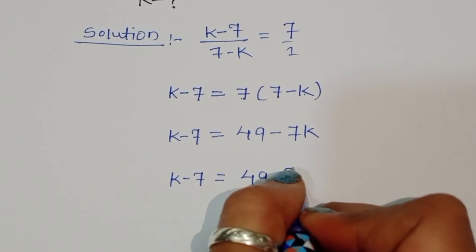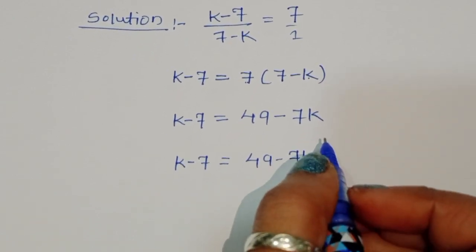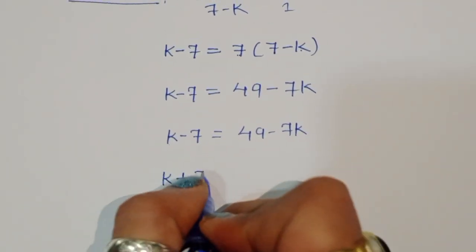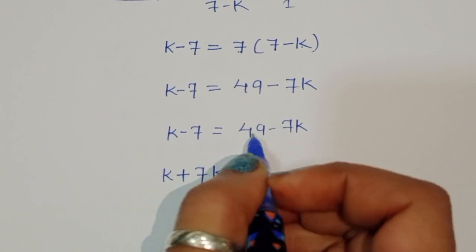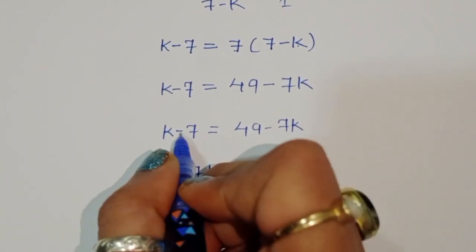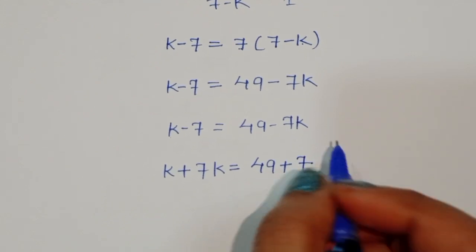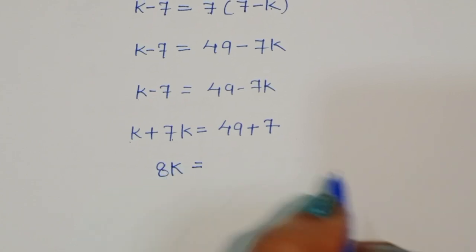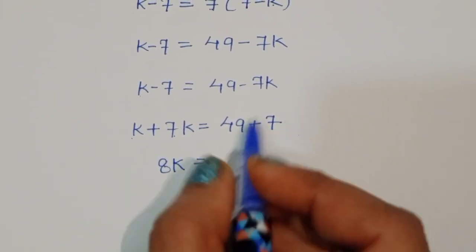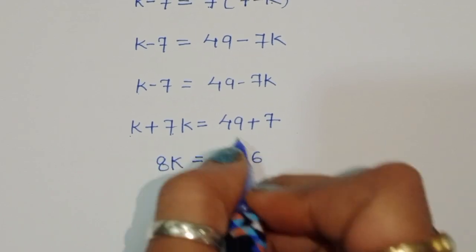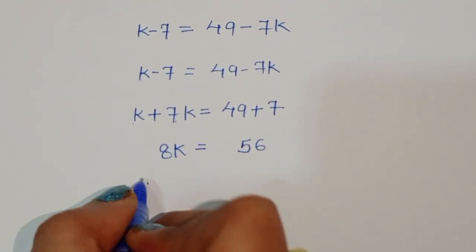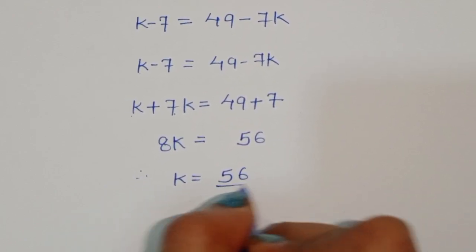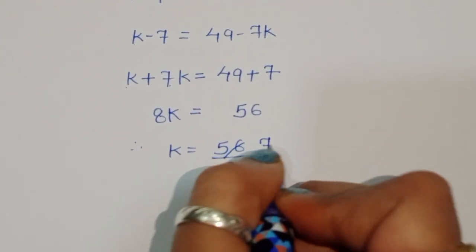Now we collect terms: k plus 7k equals 49 plus 7, so 8k equals 56. Therefore k equals 56 divided by 8, which gives k equals 7.